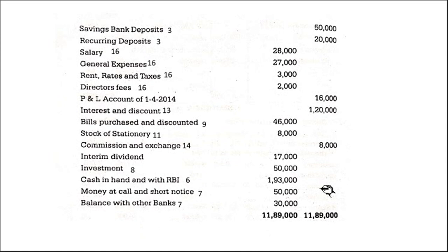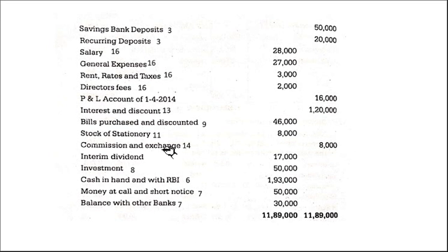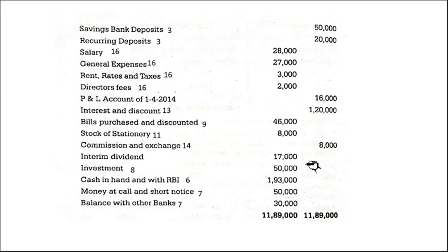So all these things we have identified. But by looking at the problem, if they have given a trial balance, you should be very careful to see whether they have given debit balance or credit balance. Sometimes commission is given — here it is on the credit side, which means it is income. If they have given commission on the debit side, it is an expense — it goes to other expenses, operating expenses. So you should be very careful.